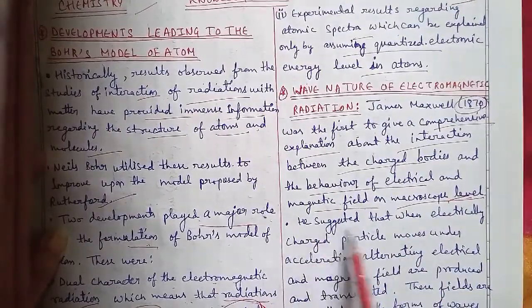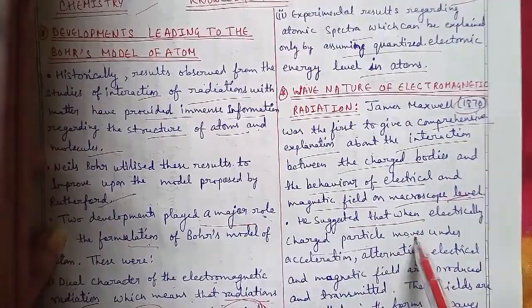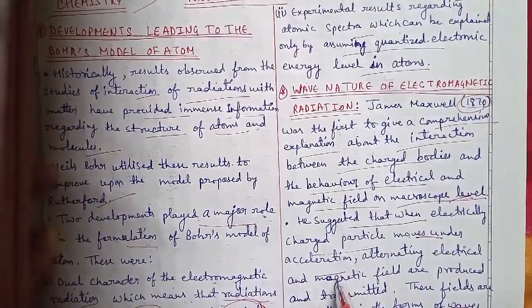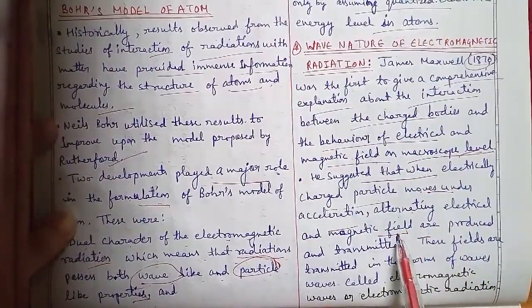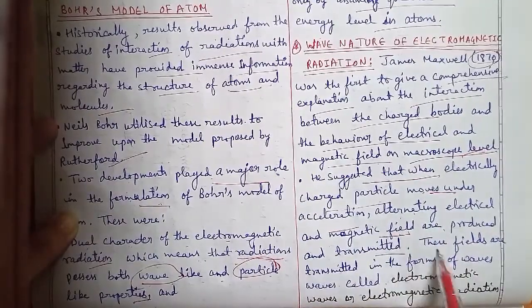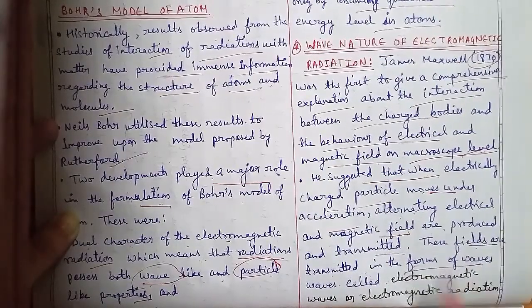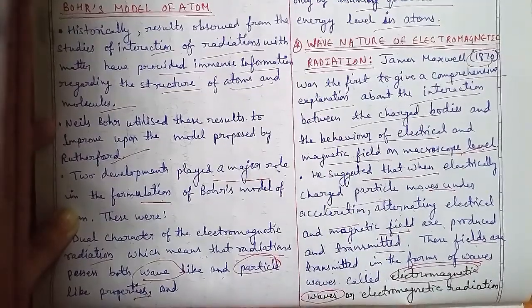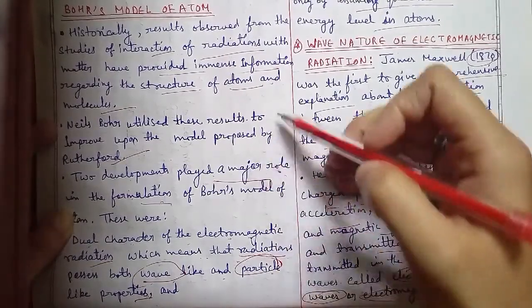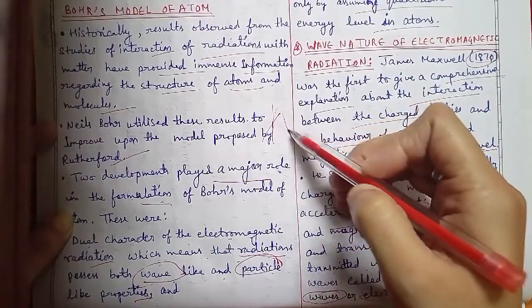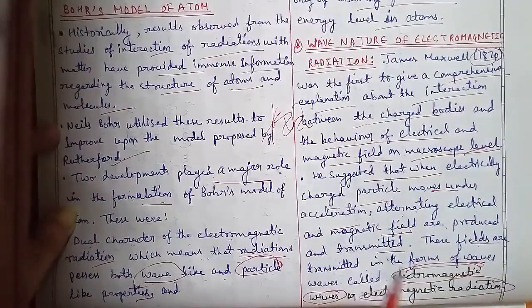He suggested that when electrically charged particles move under acceleration, they produce oscillating electric and magnetic fields. These fields are transmitted in the form of waves called electromagnetic waves, or electromagnetic radiation. The wave has a structure where one field is perpendicular to the other, and they intersect — this is the electromagnetic wave.